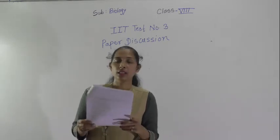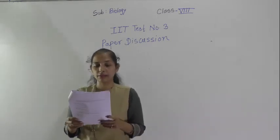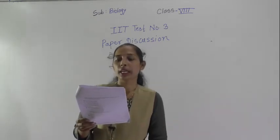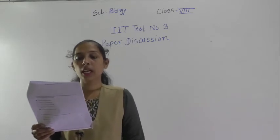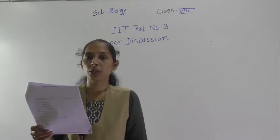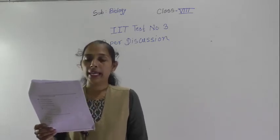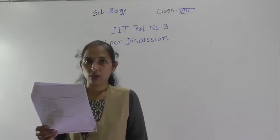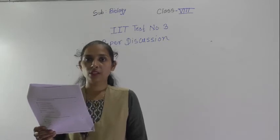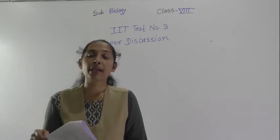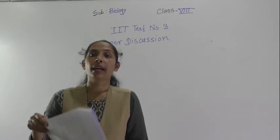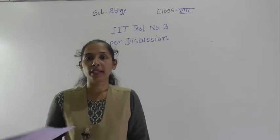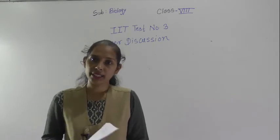Question number 17: which of the following is called the energy currency of the cell? The correct option is ATP — adenosine triphosphate — that is option C. ATP is stored in the mitochondria, and mitochondria helps to provide energy to the cell. That is the reason mitochondria is called the powerhouse of the cell.